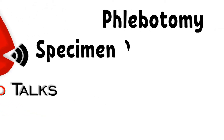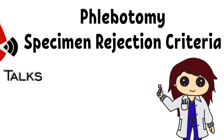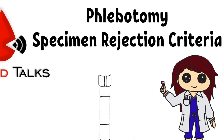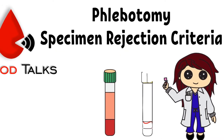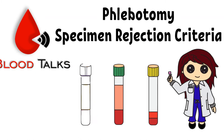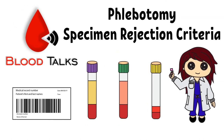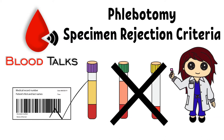Hello Blood Talk fans. Today we will be talking about phlebotomy. Phlebotomy is one of the most important steps as it serves as a link between patients and the laboratory. Phlebotomy is not something to be taken lightly because most of the time the patient's course of treatment depends on laboratory testing results. The quality of the test result is also based on the quality of the blood draw. This is why the laboratory established specimen rejection criteria to maintain accurate testing results.